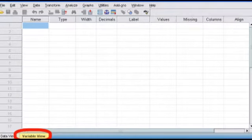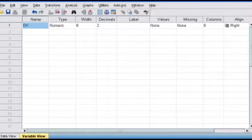In the variable view, in the column labeled name, simply type in all of your DVs and IVs, like so.